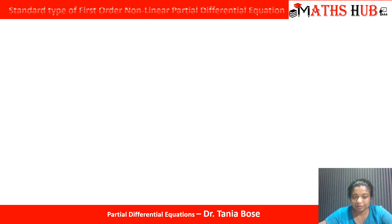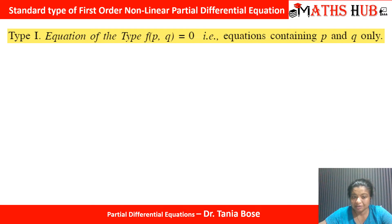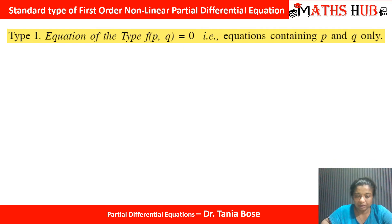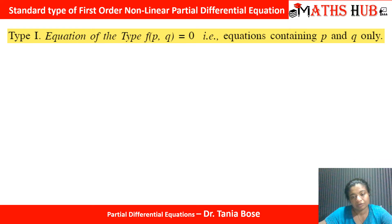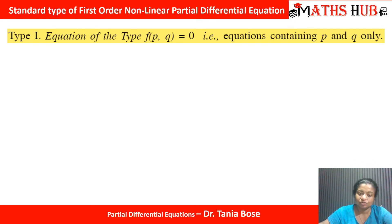The first type of PDE is when the equation contains only the terms P and Q. Every type has its own method, so we need to recognize the type and then apply it. The first type involves when the equation only contains P and Q.